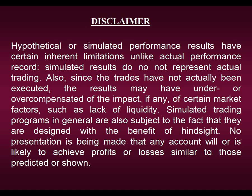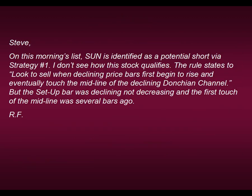I'd like to start off this week with an email received from a member. This goes into how we're going to explain how to use the Donchian Channels. It says: 'Steve, on this morning's list, SUN is identified as a potential short via strategy number one. I don't see how this stock qualifies. The rule states to look to sell when declining price bars first begin to rise and then eventually touch the midline of the declining Donchian Channel. But the setup bar was declining and not increasing, and the first touch of the midline was several bars ago.' This is a great question and I really want to clarify it once more.